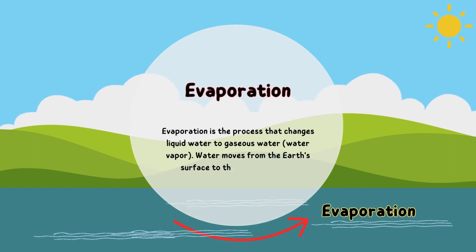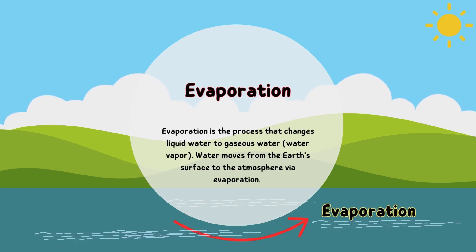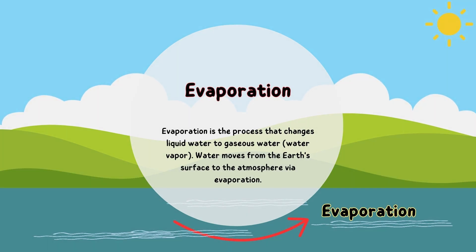Evaporation. Evaporation is the process that changes liquid water to gaseous water, water vapor. Water moves from the Earth's surface to the atmosphere via evaporation.